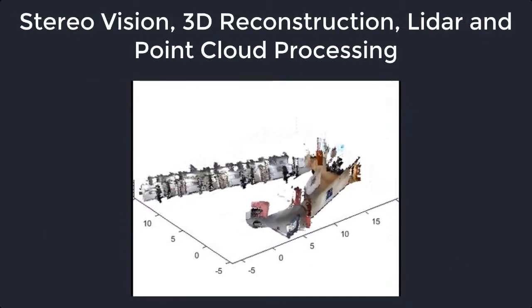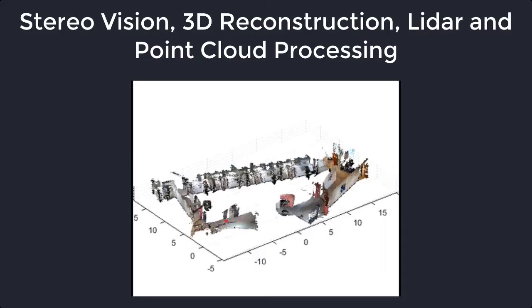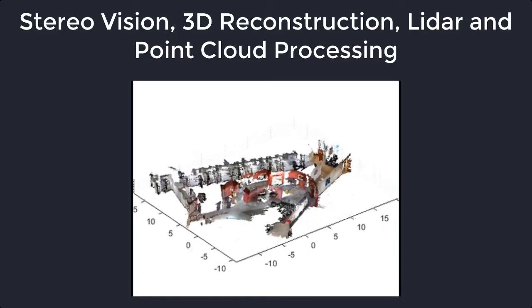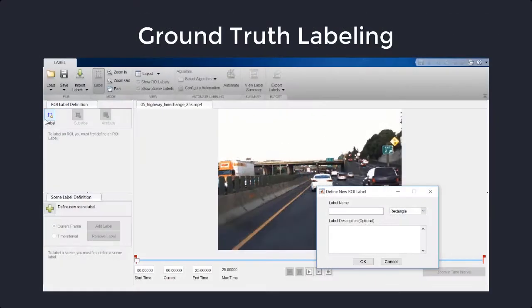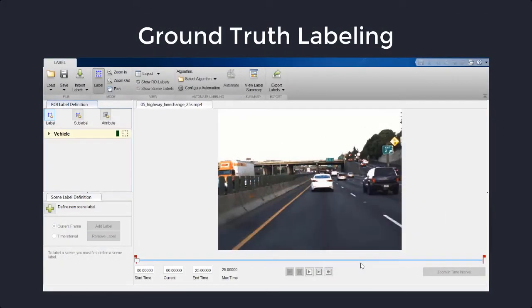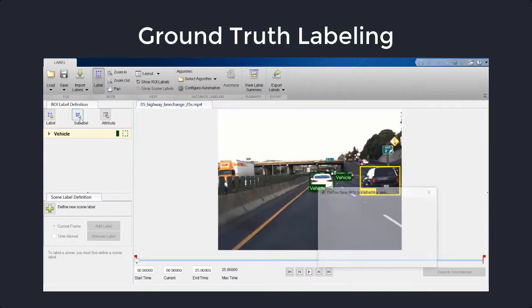You can also perform tasks related to stereo vision, 3D reconstruction, and LiDAR and point cloud processing. Computer Vision Toolbox supports ground truth labeling, including automation workflows that can accelerate the labeling process.